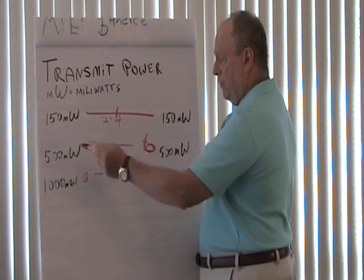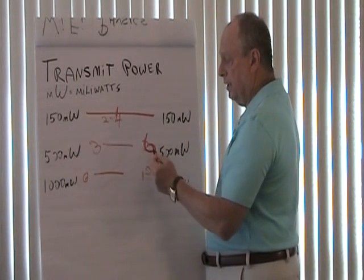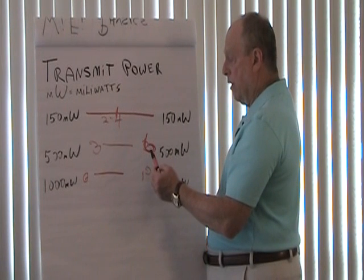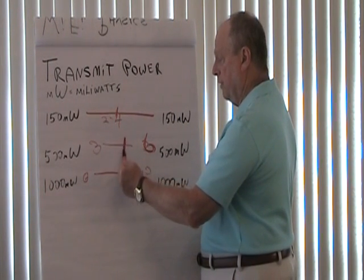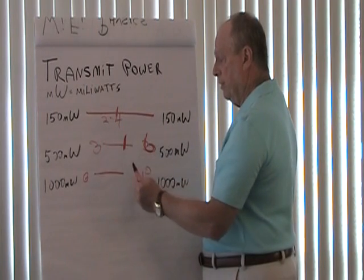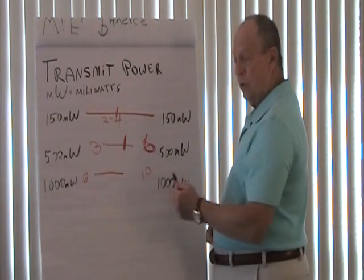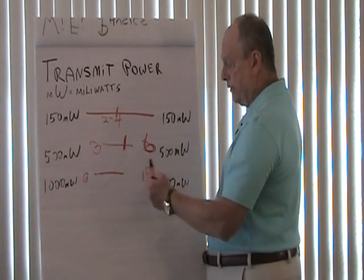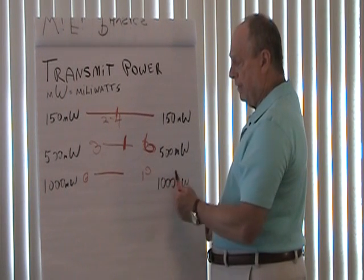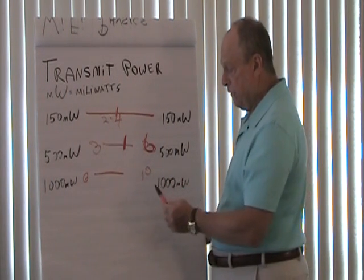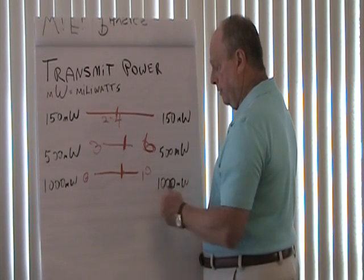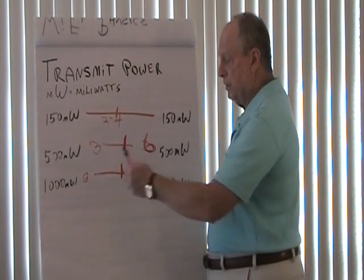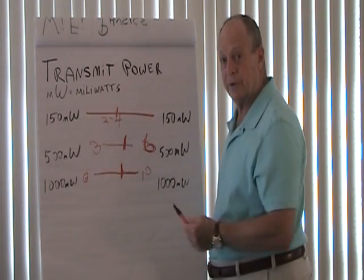If you have a 500 milliwatt transmitter, again you're meeting in the middle, but with less power on the other end, the 500 milliwatts is going to send you a signal a little further to reach you. With a 1 watt transmitter in the 6 to 10 mile range, if we have a lower power transmitter on the receiving side, that 1 watt transmitter has to go almost all the way to the receiver to make that handshake — that bidirectional link.